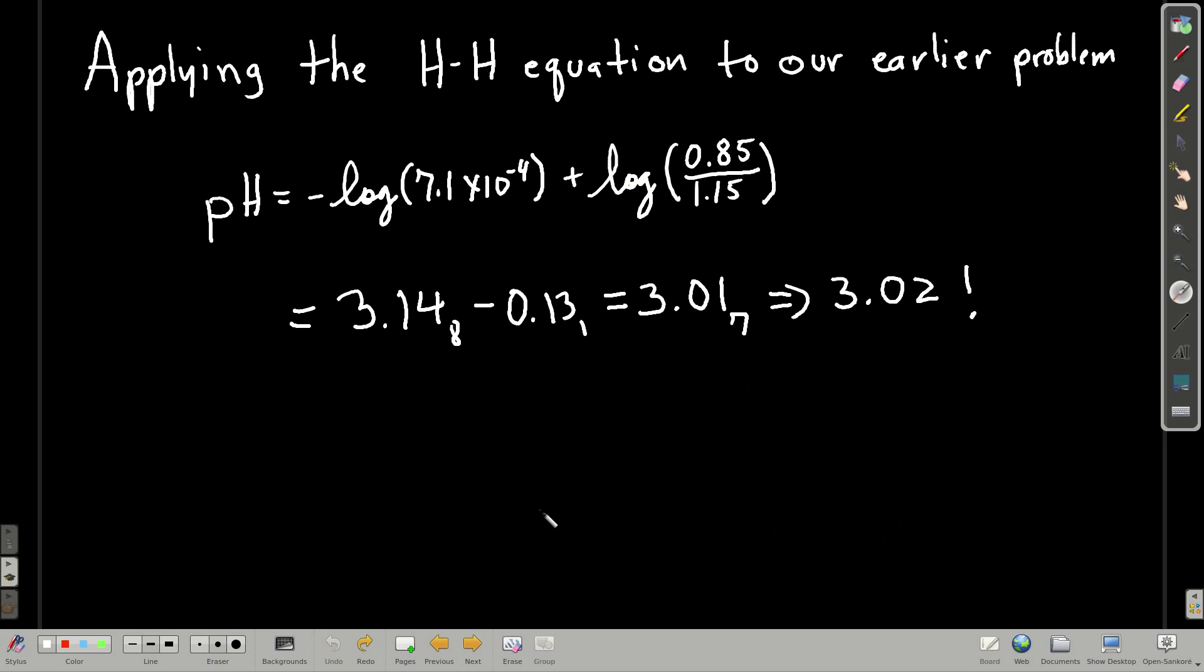Let's use it now. I'll show you how useful it is. Remember in that last video when we went through all that work to calculate the pH of that solution of the buffer that we made from hydrofluoric acid, sodium fluoride, after we added 0.15 moles of a strong acid to the 1 liter of solution? Now that we know about the Henderson-Hasselbalch equation, all we do is take negative log of the Ka, the pKa. Remember, the Ka for the hydrofluoric acid was 7.1 times 10 to the minus 4.